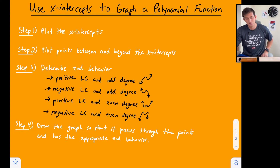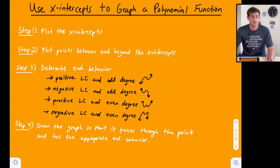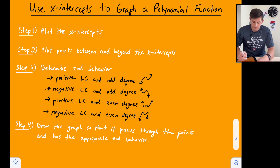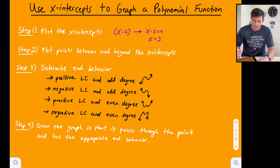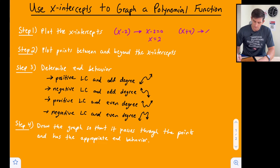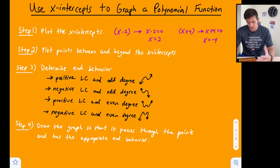Step one: we're going to plot the x-intercepts. Our polynomial function should be in factored form. For example, if we had x minus 2, we set x minus 2 equal to 0 and get an x-intercept at 2. Similarly, if we had x plus 4, the zero product property gives us an x-intercept at negative 4. So we can go ahead and plot those.